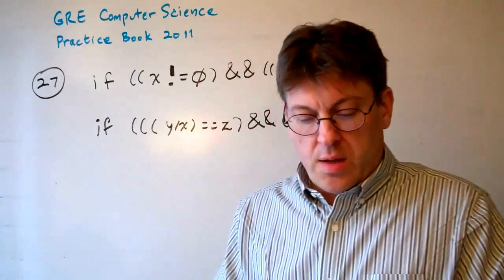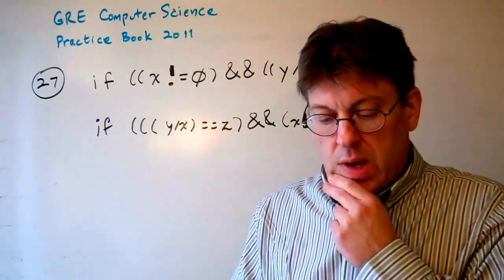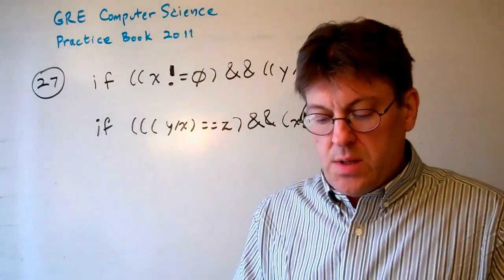Question 27. Considering the two following fragments of Java code, it gives public void P1, public void P2.